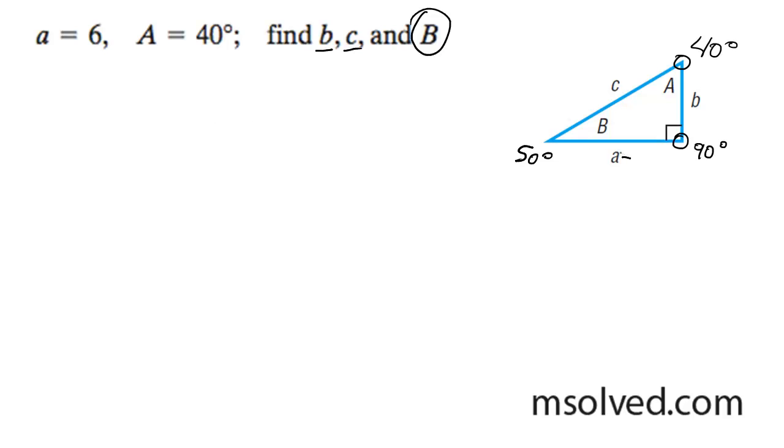So we know side a is equal to 6. I'm going to start off by solving for c. To do that, I'm going to do sine of 40 degrees equals 6 over c.